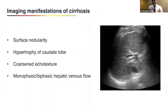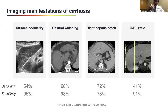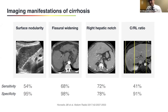On ultrasound, often the first imaging modality in these patients, we rely on similar signs: surface nodularity, hypertrophy of the caudate lobe, and the echotexture of the liver, which becomes more and more heterogeneous and coarse as fibrosis increases. Signs seen on Doppler imaging may also help, such as monophasic or biphasic hepatic venous flow. When we look at how we perform as imagers in calling cirrhosis using these signs, our specificity is very high — meaning that when we see these signs, we are most of the time correct in diagnosing cirrhosis.